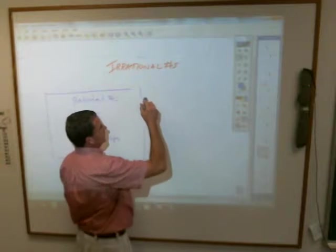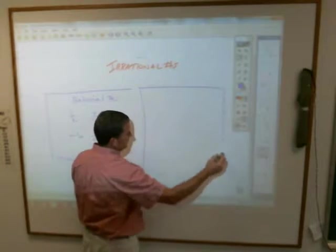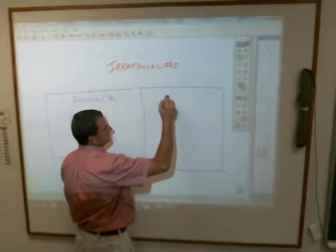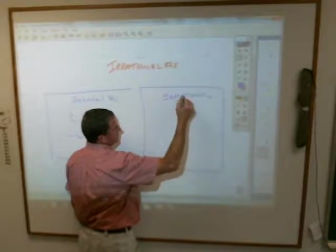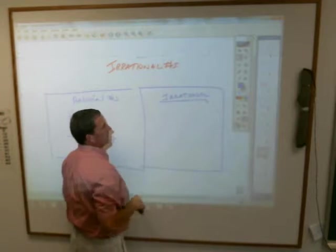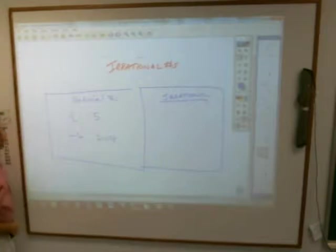And then we've got what we're talking about today, which are the irrational numbers. And they are ones that are not quite as easy to work with. Remember, I pretty much gave you two examples of what you, for now, just need to know that are irrational numbers. Do you know what they were?